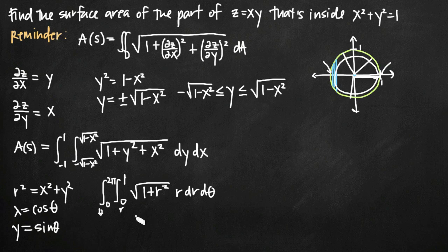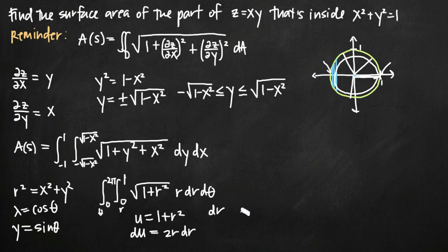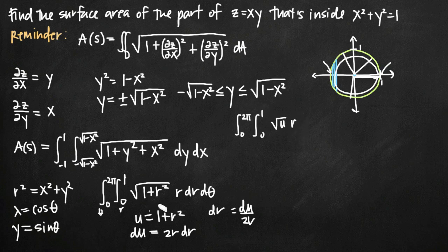We'll solve this with u-substitution. Set u equal to 1 plus r squared. Taking the derivative gives du equals 2r dr. Solving for dr by dividing both sides by 2r, we get dr equals du over 2r. Substituting back into our integral, we get the integral from 0 to 2 pi of the integral from 0 to 1 of the square root of u times r times du over 2r, then d theta.